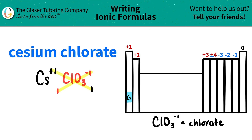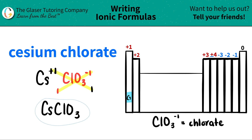Now we're ready to write the formula. I have cesium, Cs — I only need one of them, so I don't have to write a subscript. And then chlorate, ClO₃. I only have one of them, so I don't need parentheses or anything like that. So cesium chlorate is just CsClO₃.